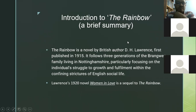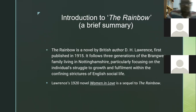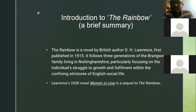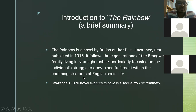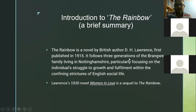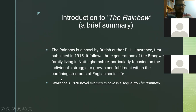Introduction to The Rainbow: The Rainbow is a novel by British author D.H. Lawrence, first published in 1915. It follows three generations of the Brangwen family living in Nottinghamshire, particularly focusing on individuals' struggle for growth and fulfillment within the confining structures of English social life. The setting is Nottinghamshire, England, and the time is the Victorian era. Lawrence's 1920 novel Women in Love is a sequel to The Rainbow.